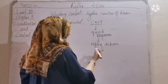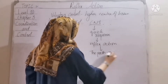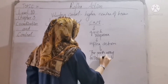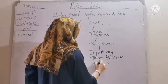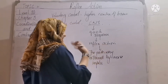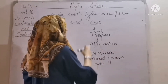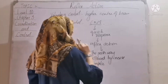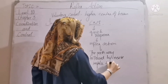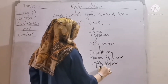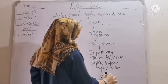Reflex action is the pathway followed by the nerve impulse. The pathway — the track — followed by the nerve impulse to produce reflex action is basically called the reflex arc. The pathway followed by the nerve impulse to form reflex action is called the reflex arc.